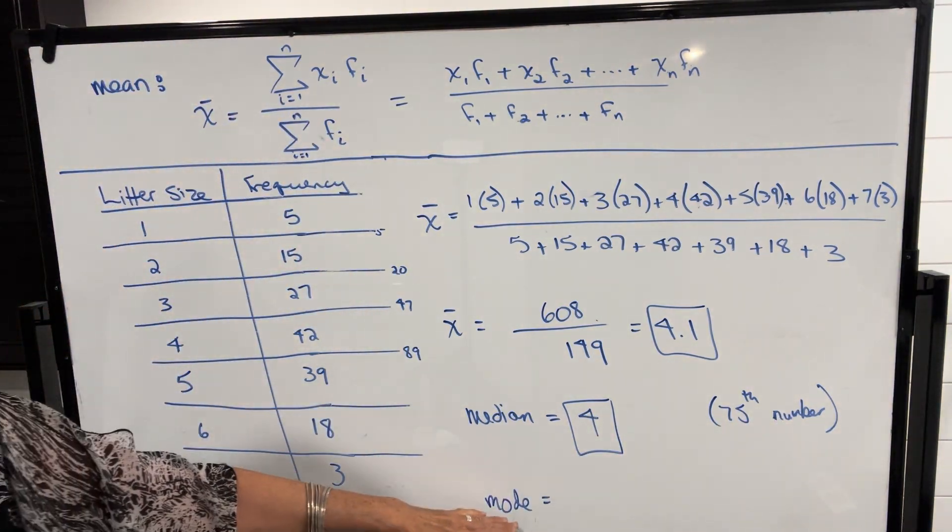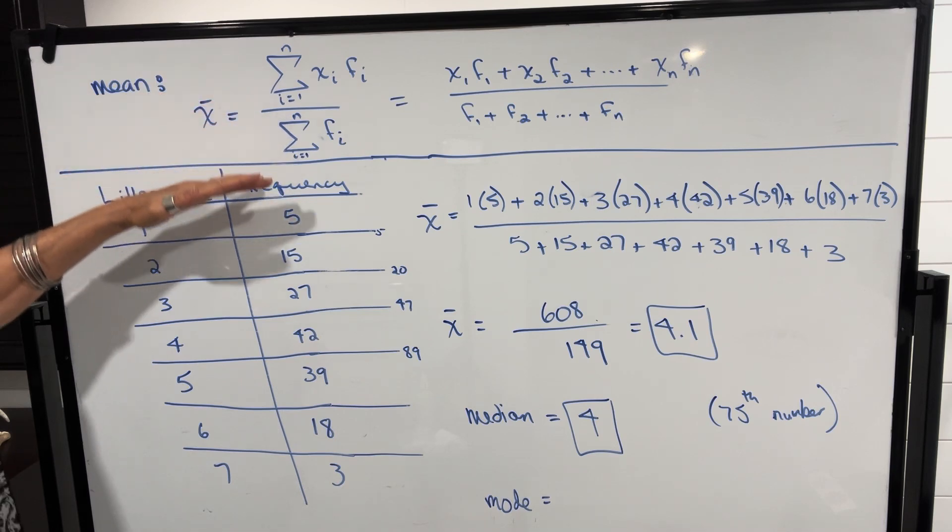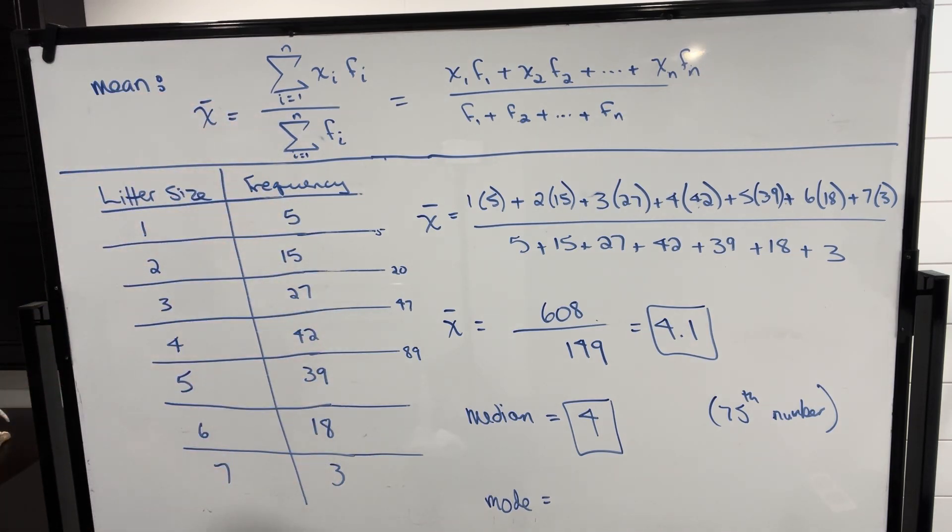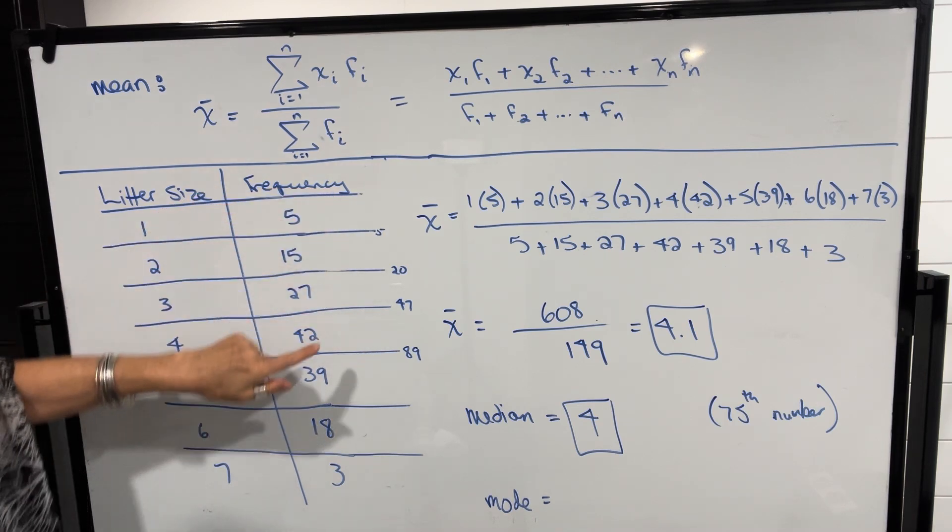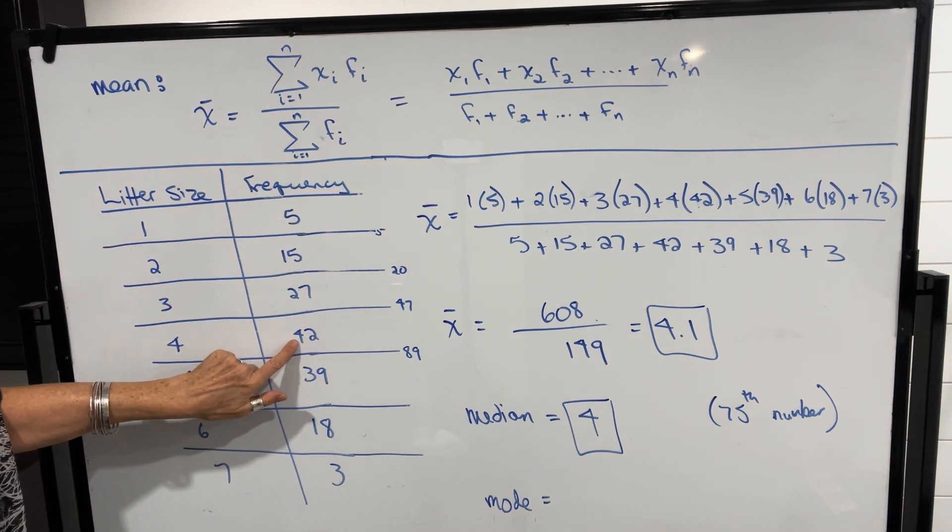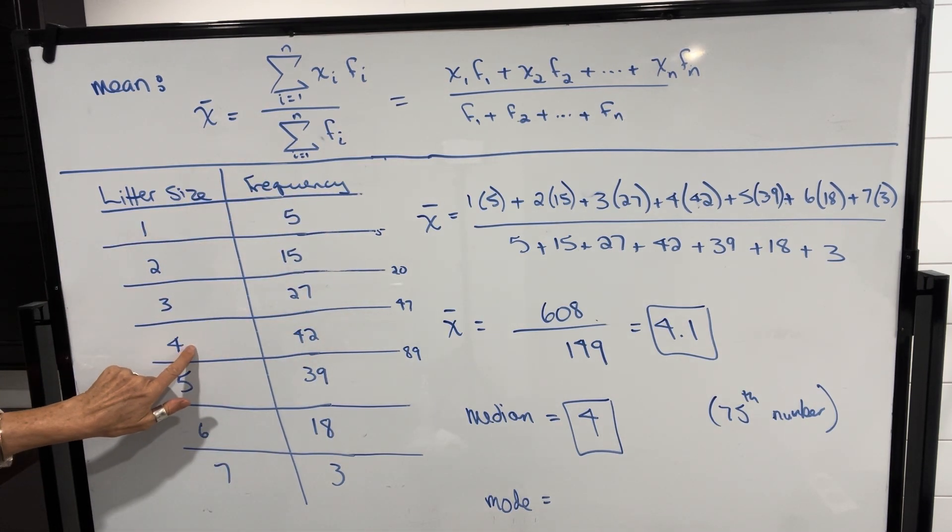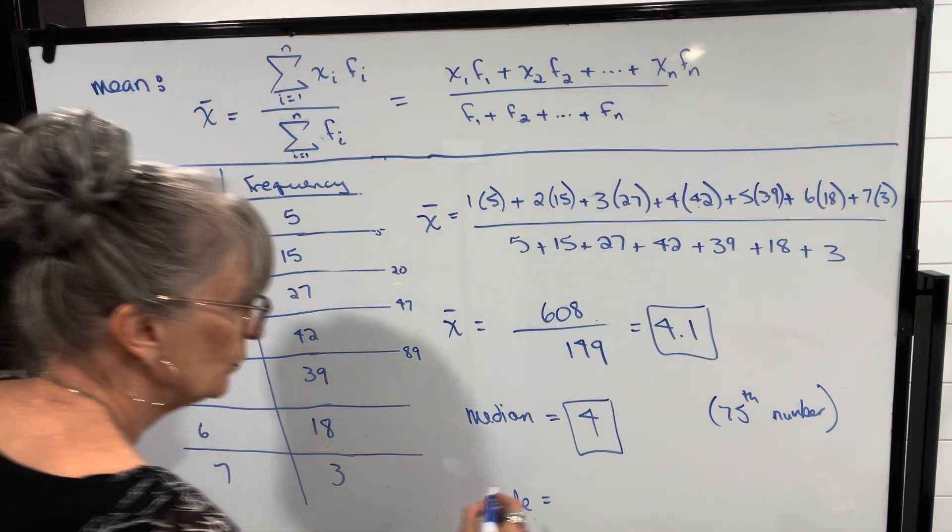The mode is easy to calculate when you have your data listed in a frequency distribution. It's going to be the one with the largest frequency. And we can see that the largest frequency is with 4 pups in a litter. So the mode would be 4.